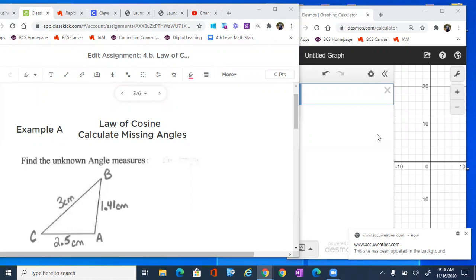So let's go ahead and write the law of cosine down real quick. It is nice and simple. It is C squared equals A squared plus B squared minus 2AB cosine of C.